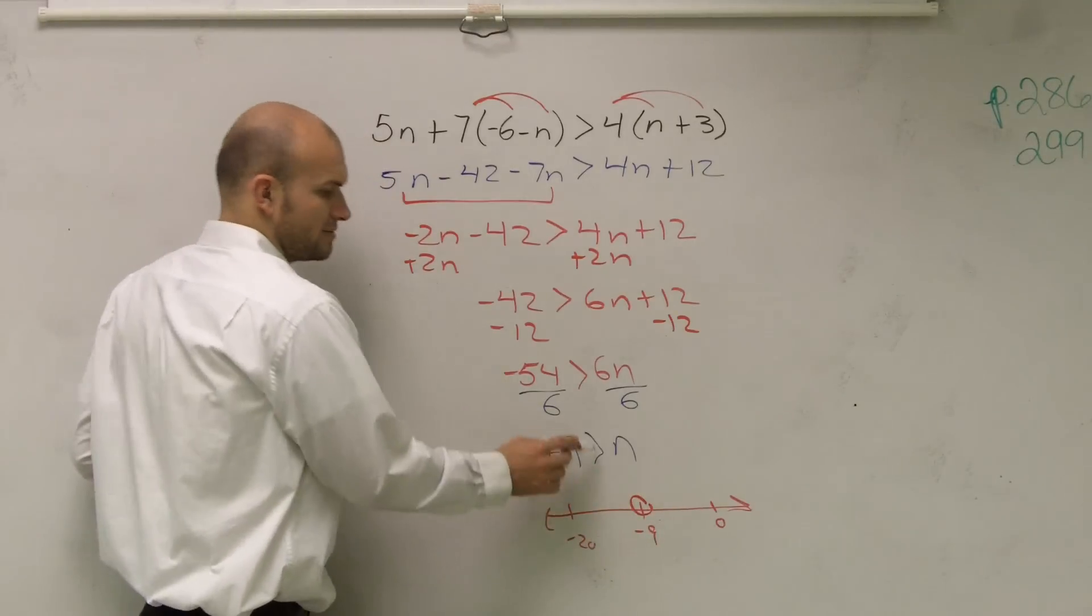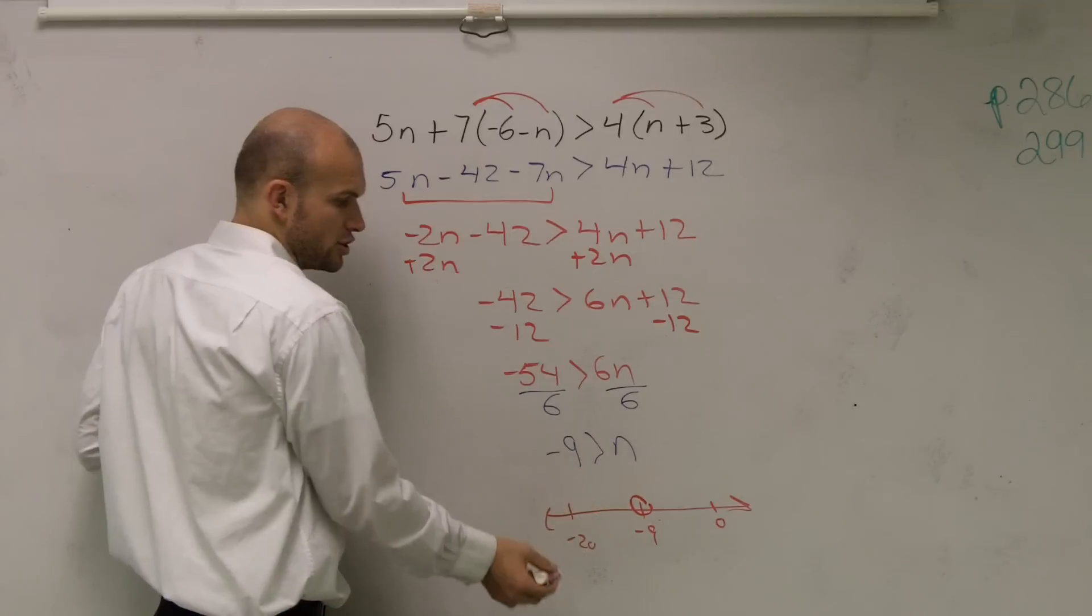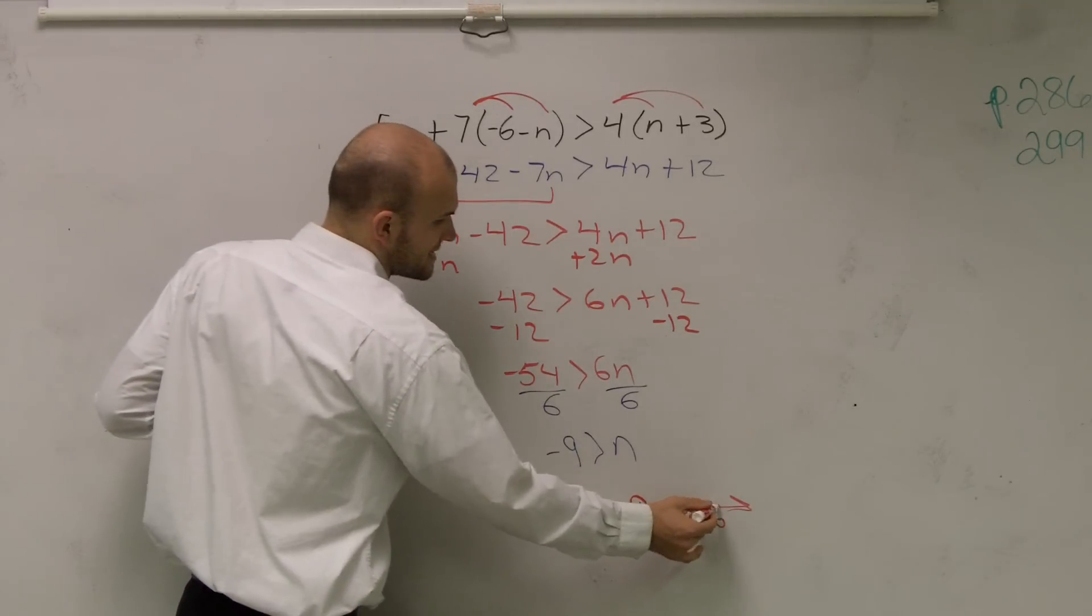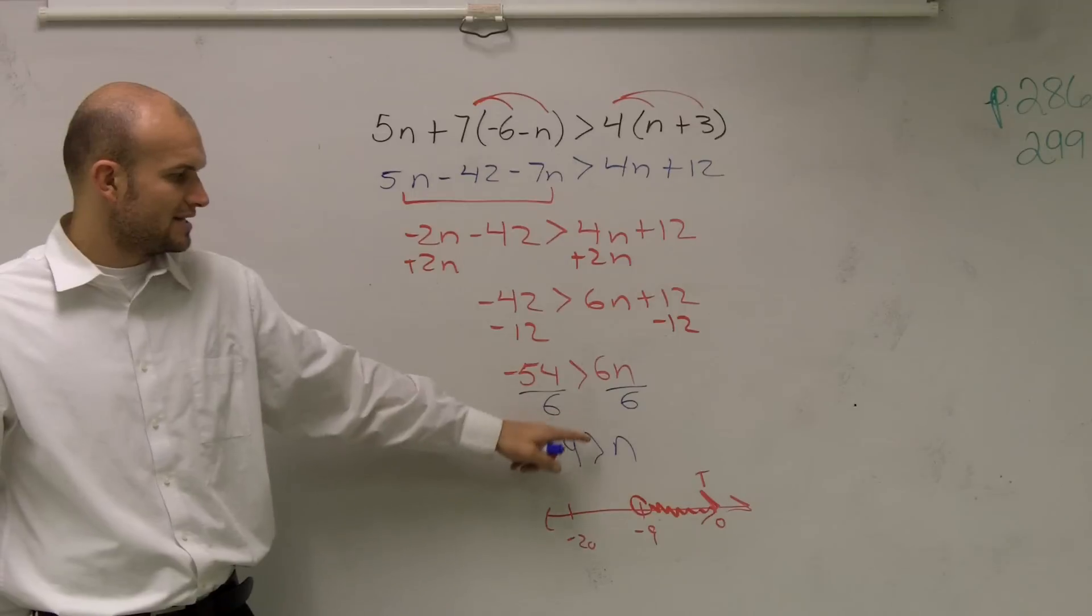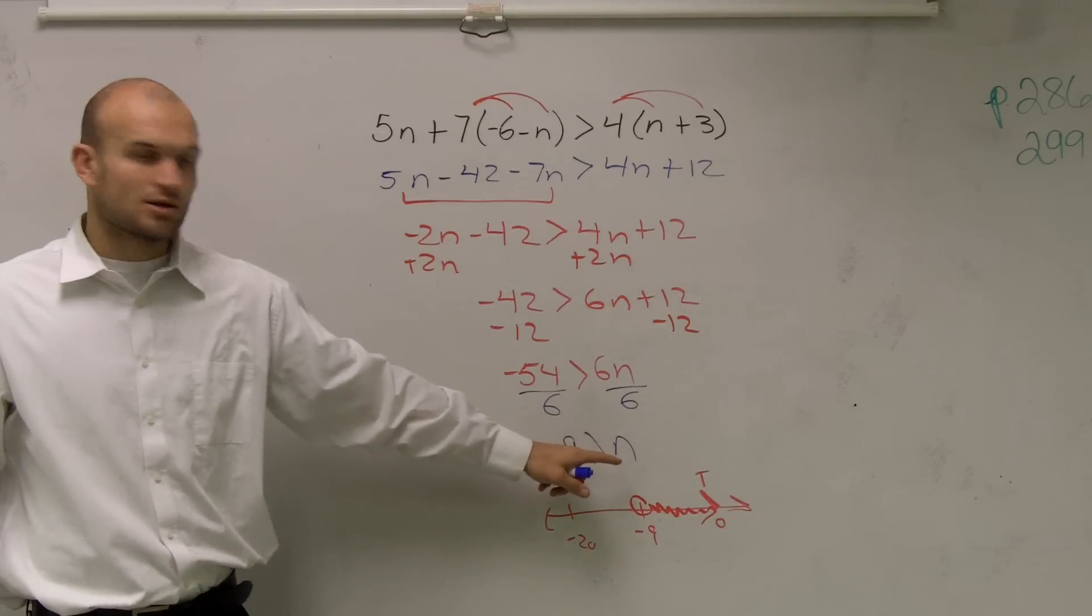So I make my nice big circle. It's greater than, it's not equal to, so it's an open circle. And since 0 would make my inequality true, negative 9 is greater than 0. Oh no.